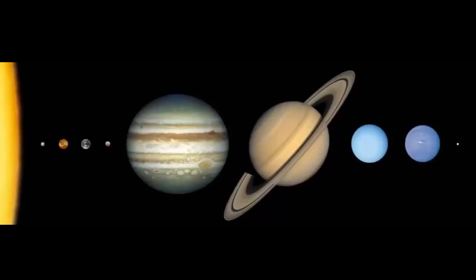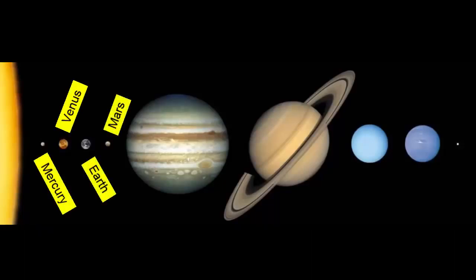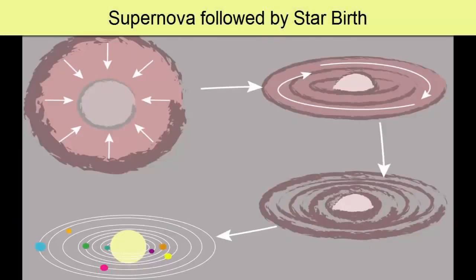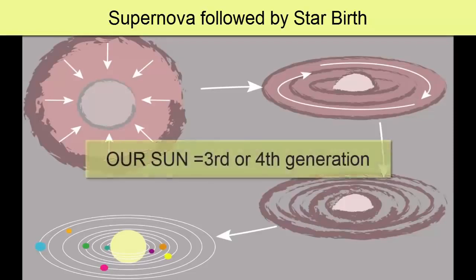Turns out that to create rocky planets the size of Mercury, Venus, Earth, Mars, and some of the rocky moons in our solar system, multiple episodes of star deaths, supernovas, and subsequent births from the remnants were necessary to cook up enough of the required heavy elements. Astronomers believe that our Sun is likely a third or fourth generation star.